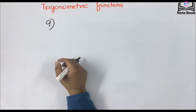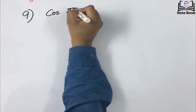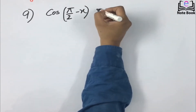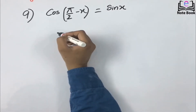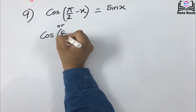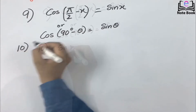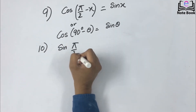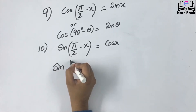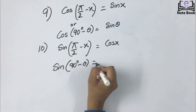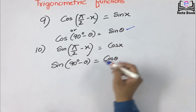After learning about sum and difference of two angles in cosine, let's recap a few things. We have learned in a previous session that cos(π/2 − x) = sin x, or equivalently cos(90° − θ) = sin θ. Similarly, sin(π/2 − x) = cos x, or sin(90° − θ) = cos θ.